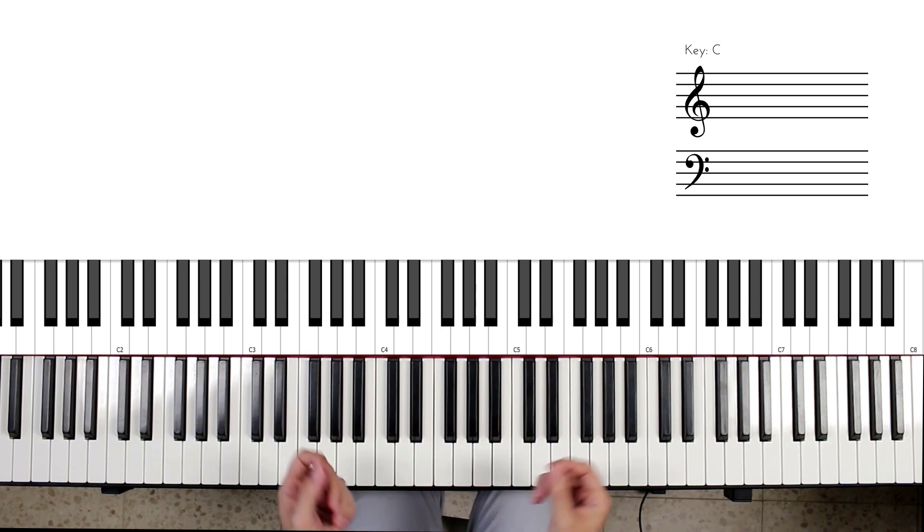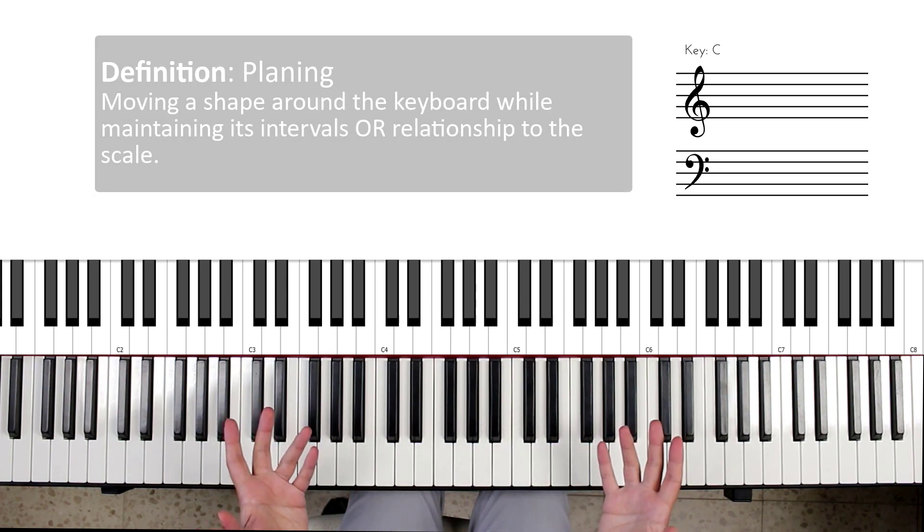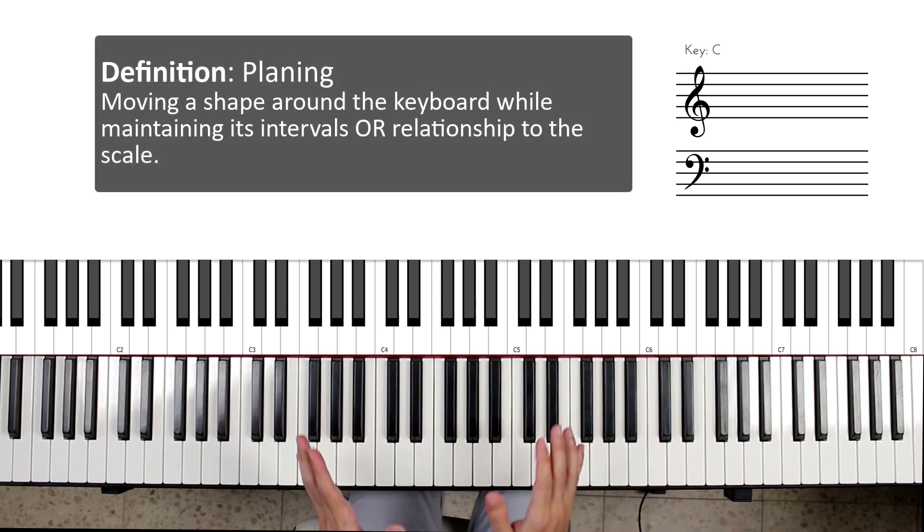Let's discuss these two particular points in the piece. These two points use a concept called planing. And I'd like to explain what planing is and discuss the two different types of planing that are commonly used. To do this, let's take a simple melody. Let's take Mary Had a Little Lamb.